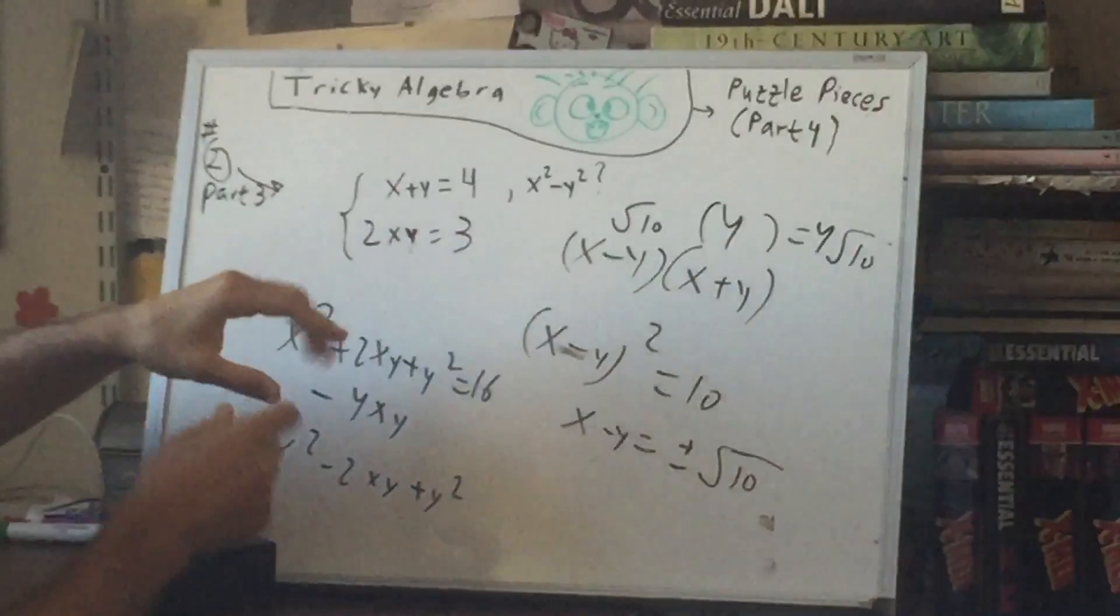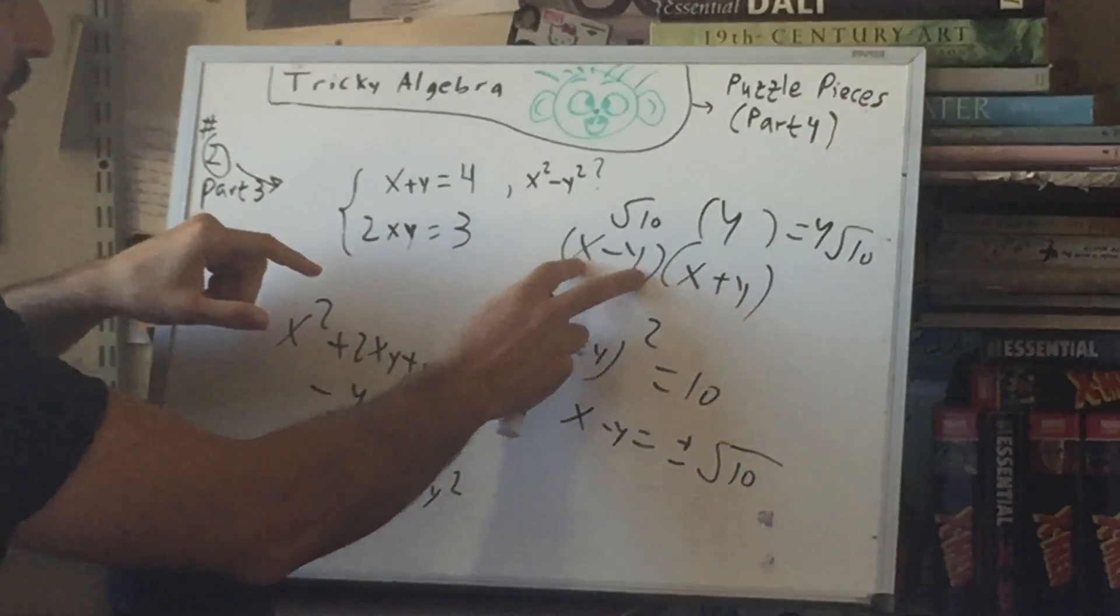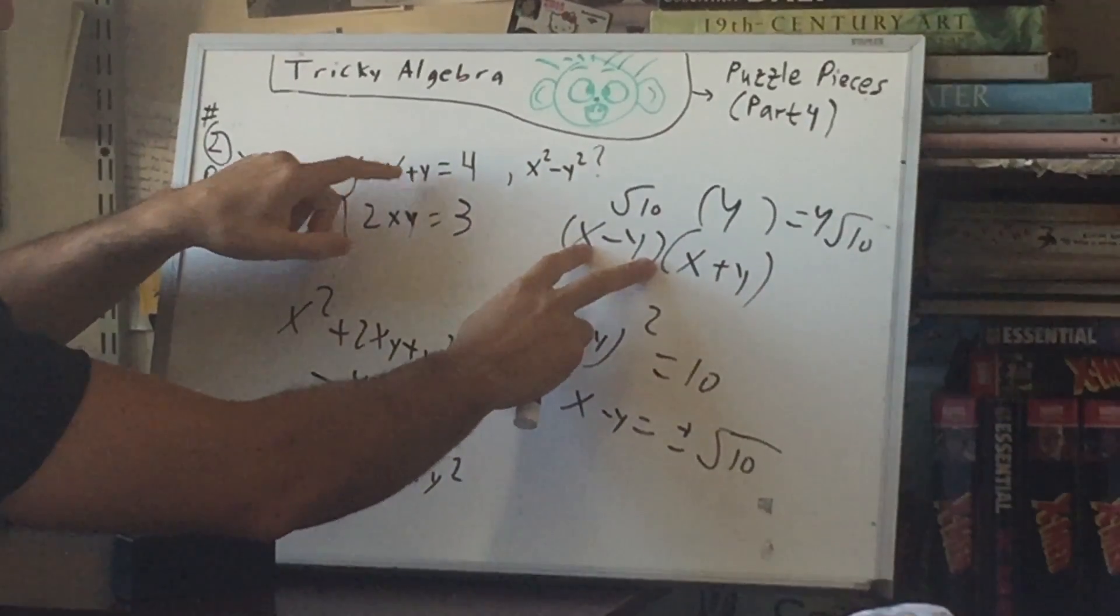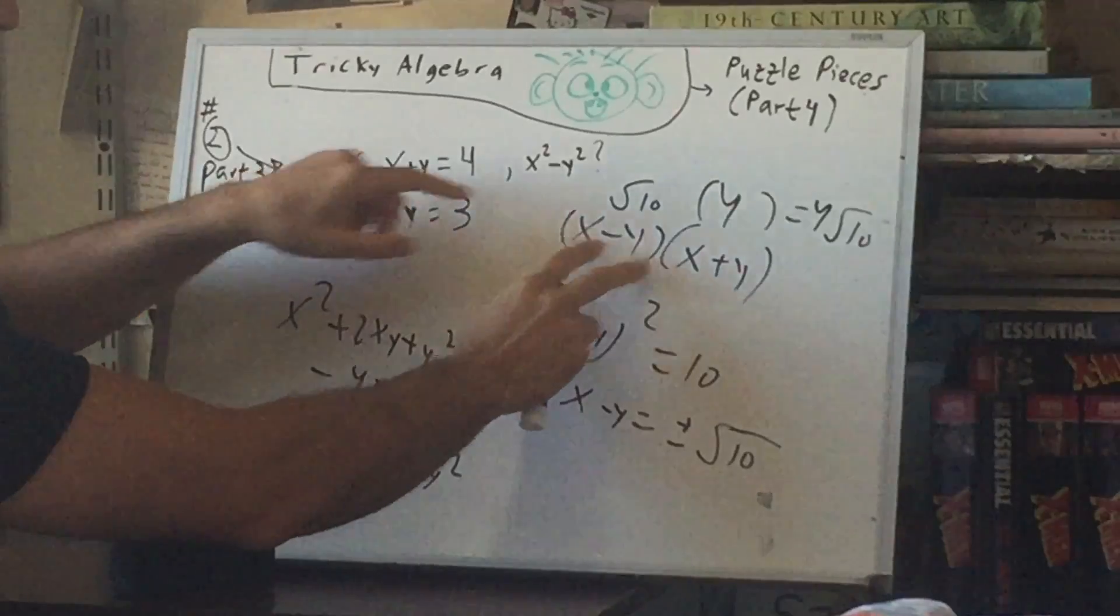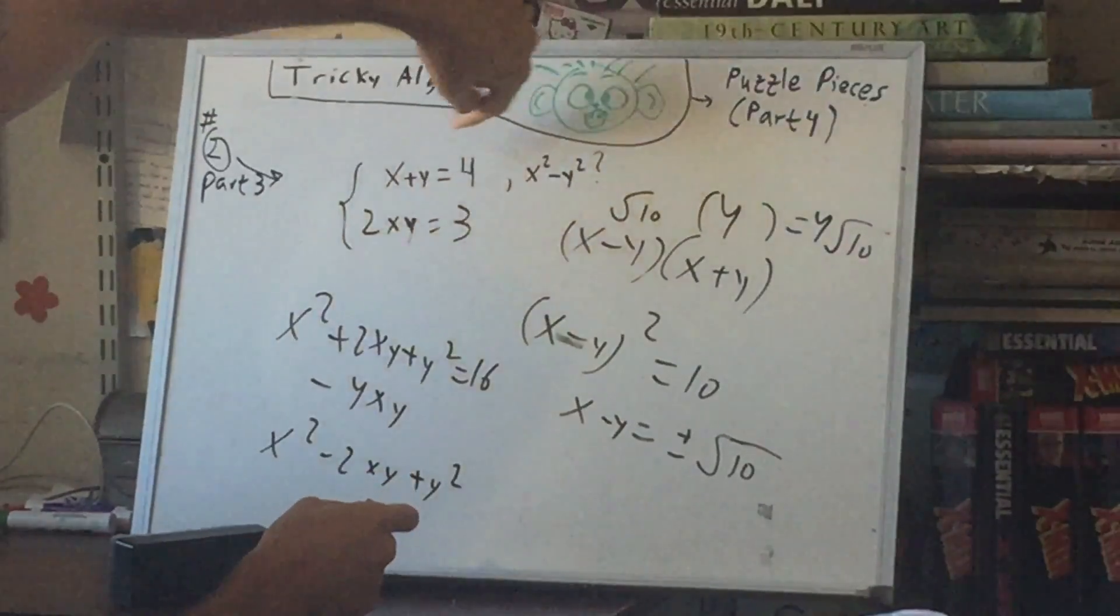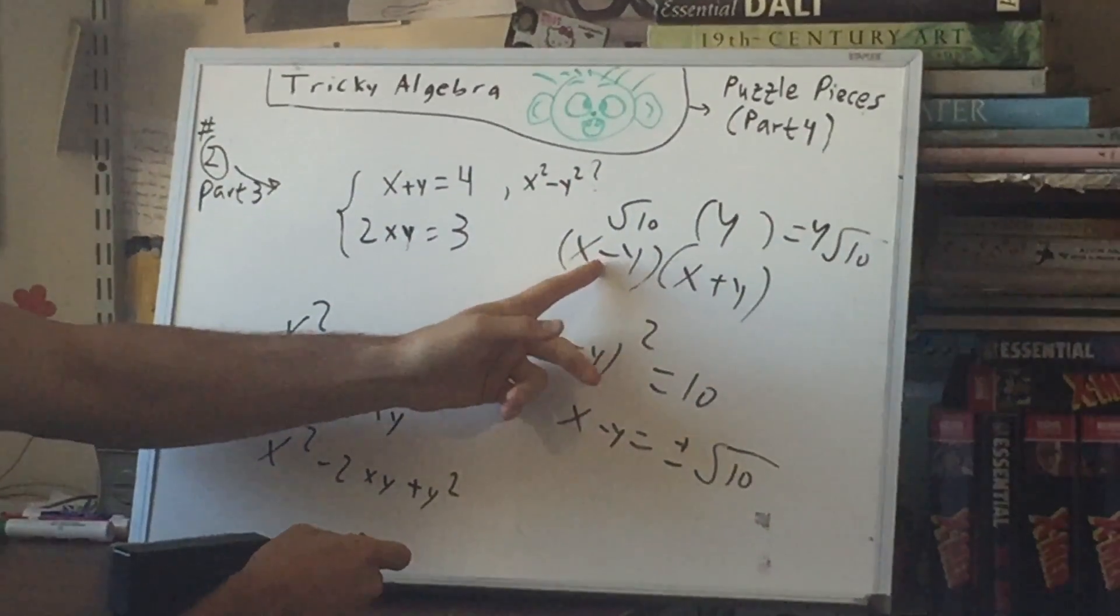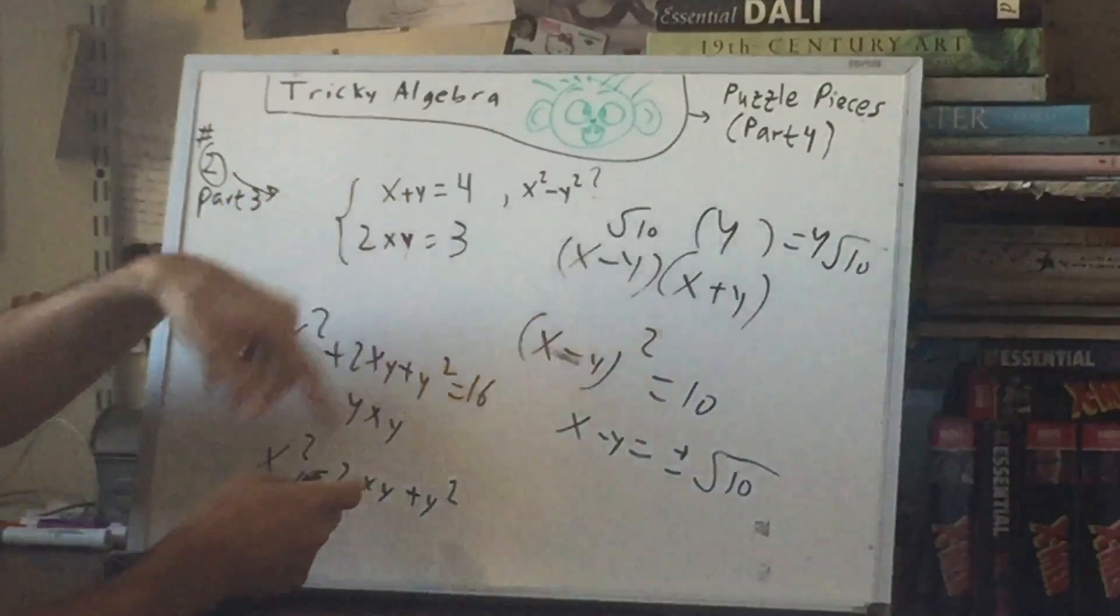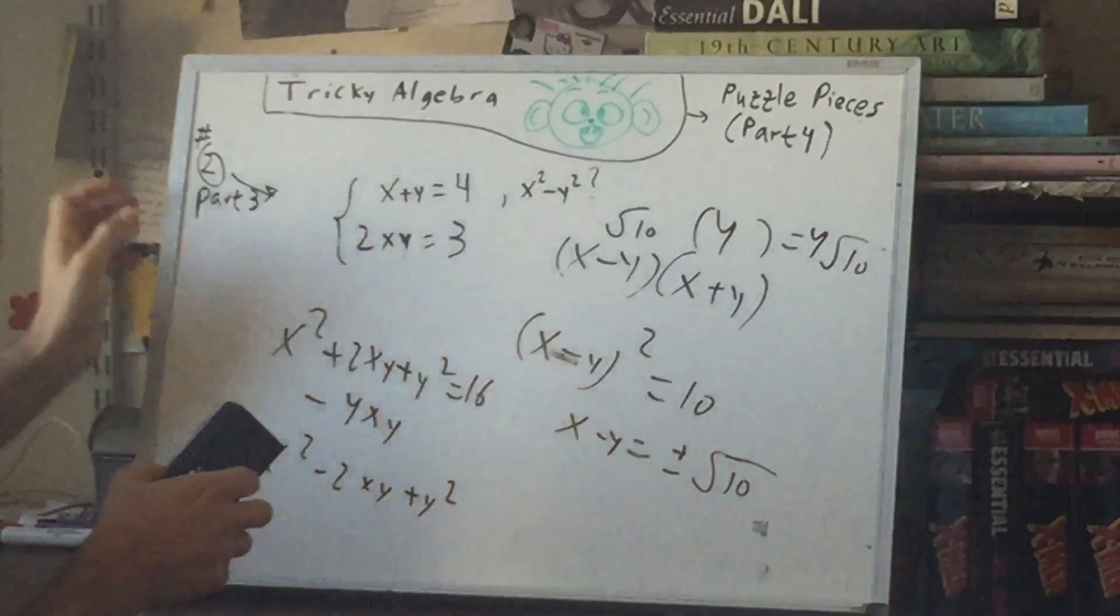So notice to recap. To create this part of the factorization we first squared this, subtracted a couple of these to engineer the squared version, and then square root it. So we basically went on this whole detour to come back to this term. Why do we do that? To avoid having to find x and y. All right I'll see you guys in the next video. Actually no, one more thing.